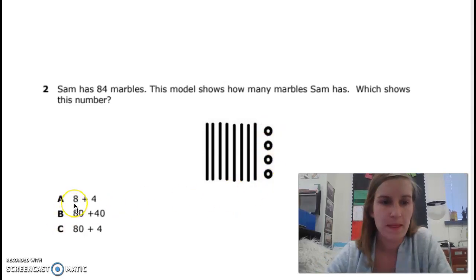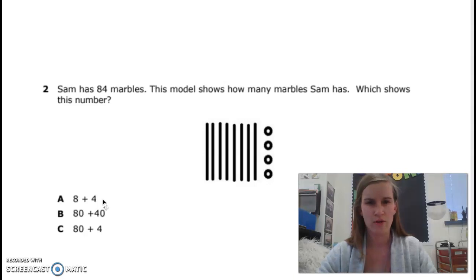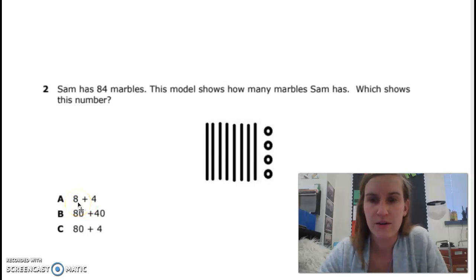So let's see. A. 8 plus 4. Hmm. Well, 8 plus 4, we have 8, 9, 10, 11, 12. That equals 12. Does this show the number 12? No. It's missing that 0 after the 8.